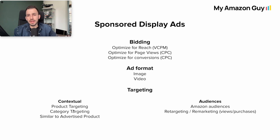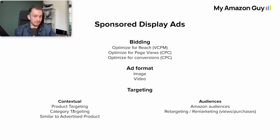With contextual targeting we are targeting products, categories, or products similar to the advertised product — basically targeting product groups. With audience targeting we can do two things: retargeting and remarketing (for views and purchases), and secondly we can use Amazon Audiences, which are pre-segmented audience groups Amazon has generated — for example, people in-market for buying a microphone. Now let's dive into the account itself.